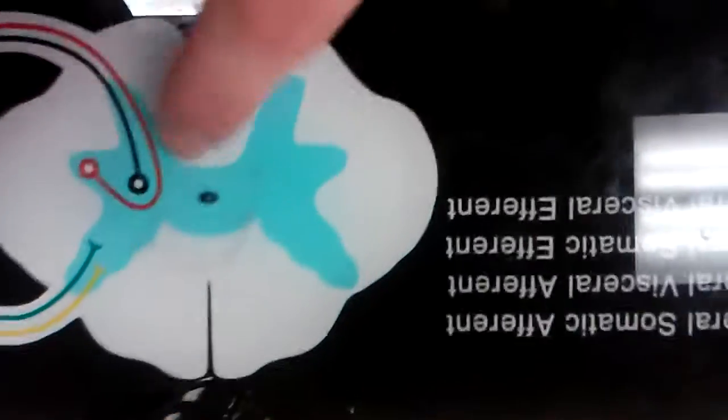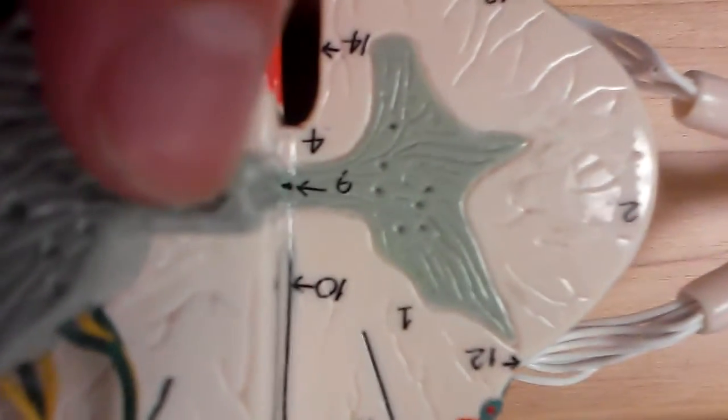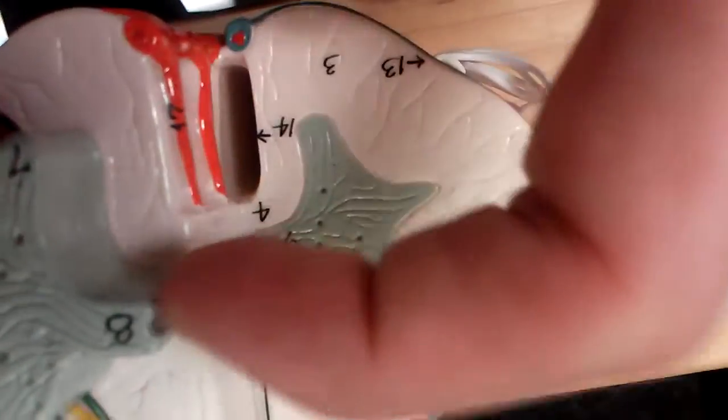Next is the central canal, which is that black dot in the middle. You can't really see it on this one, except there's like a slight dip right there. It kind of goes in a little bit. That would be the central canal going down, like right here, that little groove.